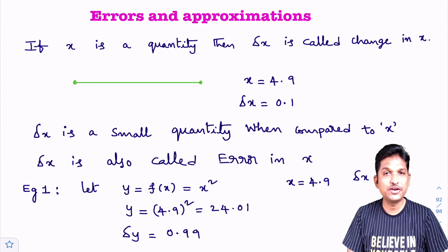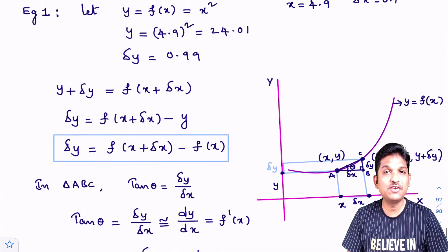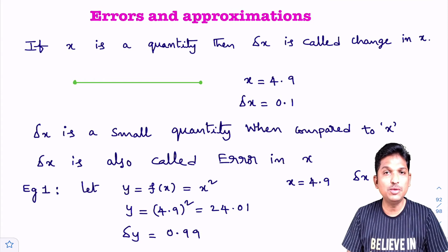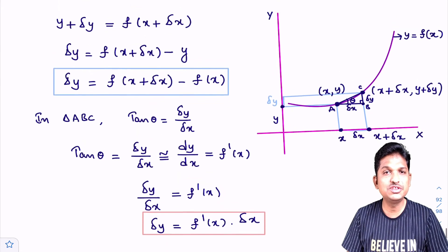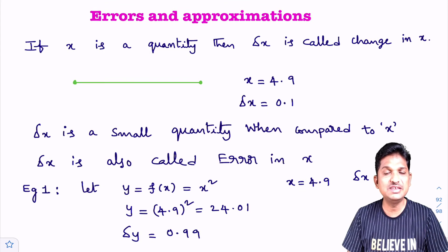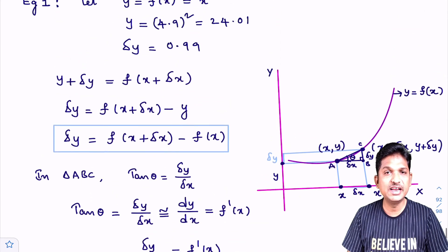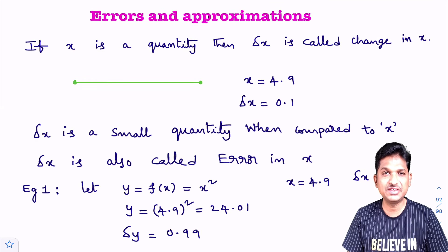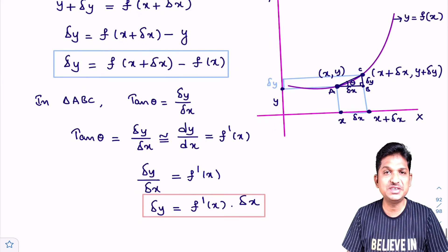In this class, what are the things we are going to learn? We will learn what is delta x, what is delta y, and why delta y is called corresponding change in y. The formula for delta y is f of x plus delta x minus f of x. We will also learn why delta y equals f dash of x into delta x. I am going to derive these two results. Please drop a like for this video. Let's begin the class.